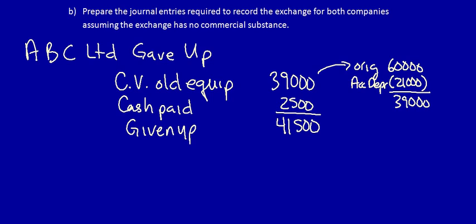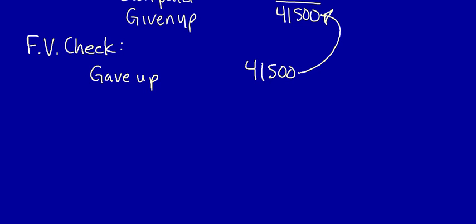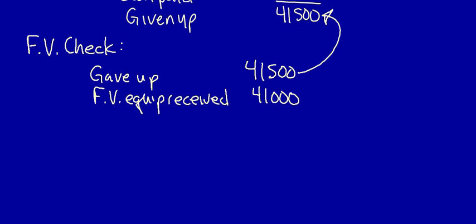That $41,500 should be the value of the new equipment, but we have to do a fair value check first. We look at the value of what we gave up — $41,500, exactly what we just calculated — and compare it to the fair value of the equipment received, which is $41,000. The fair value of the equipment received is less than what we gave up, so a fair value adjustment is required. The maximum amount we can recognize the new equipment at is the fair value of the equipment received: $41,000.